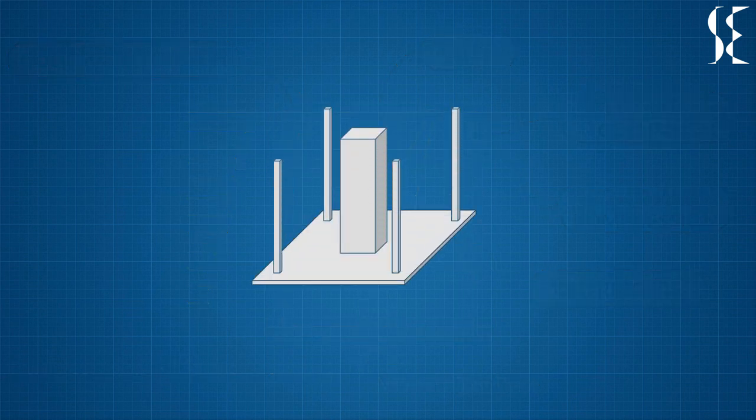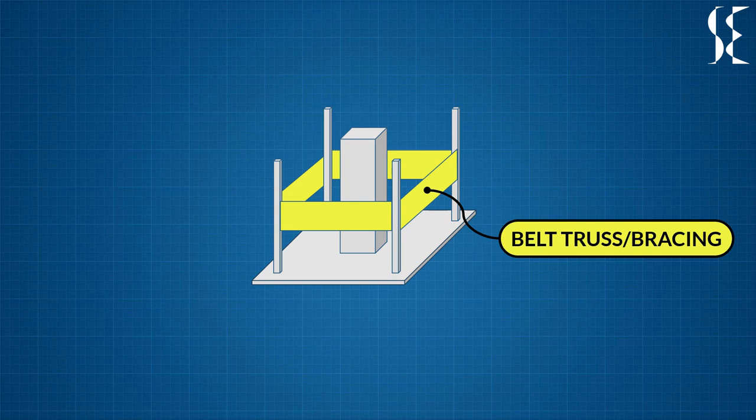Belt truss, as the name suggests, forms a belt around the building connecting perimeter columns. Belt trusses are often provided to distribute the tensile and compressive forces to a large number of exterior frame columns.